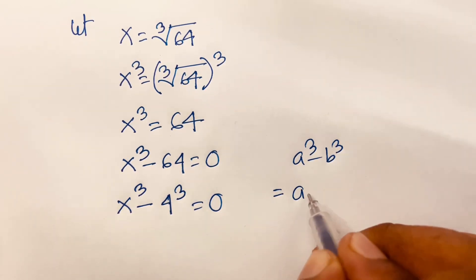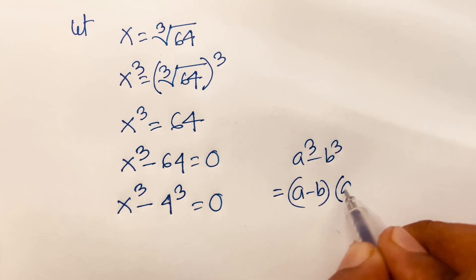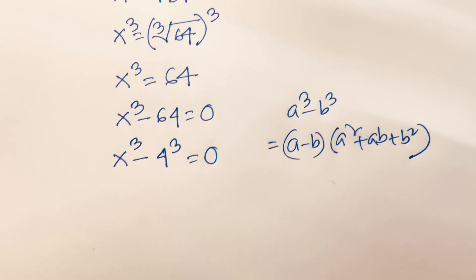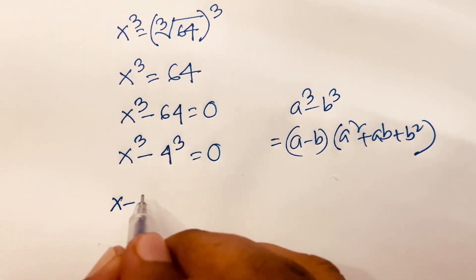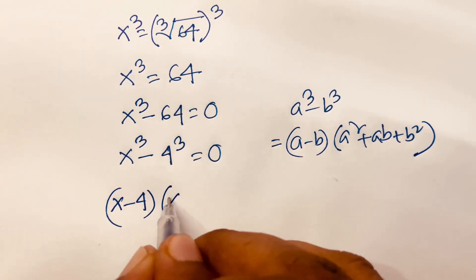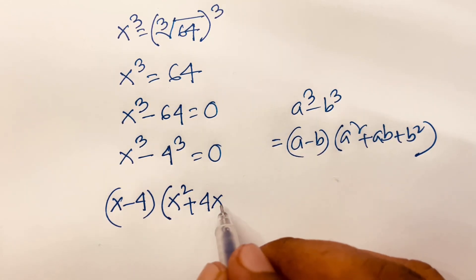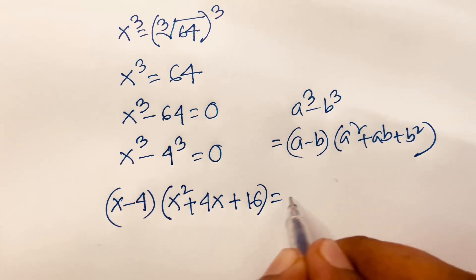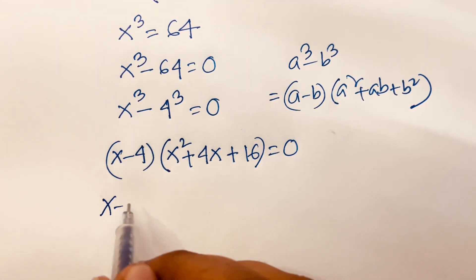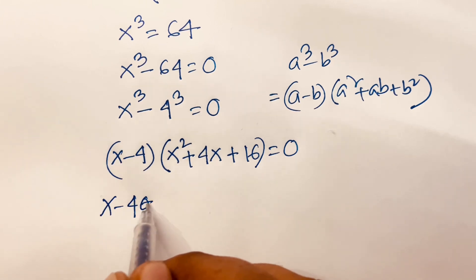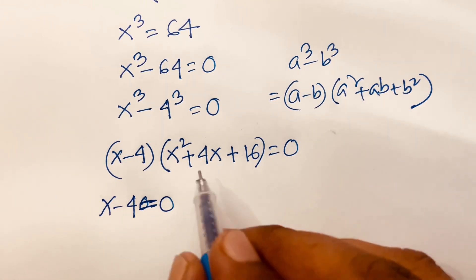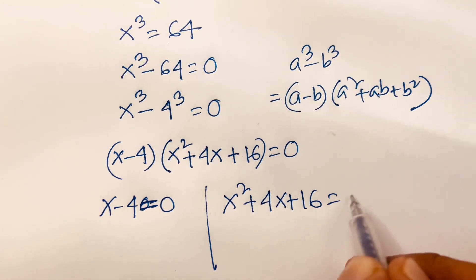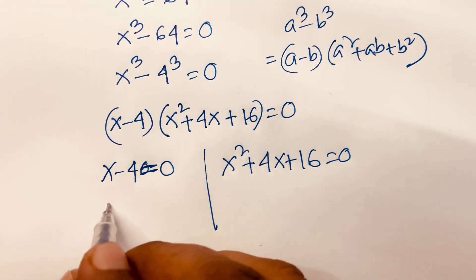We know that a cubed minus b cubed equals (a minus b)(a squared plus ab plus b squared). Applying this formula, we get x minus 4 times x squared plus 4x plus 4 squared, which is 16, equals 0. So we have x minus 4 equals 0, or x squared plus 4x plus 16 equals 0.